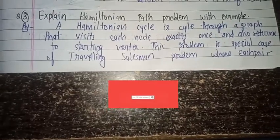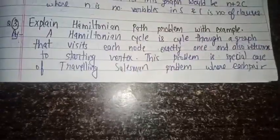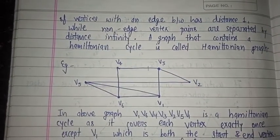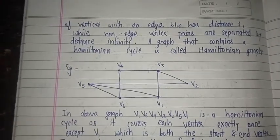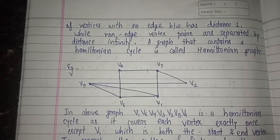This problem is a special case of the traveling salesman problem where each pair of vertices with an edge between has distance 1, while non-adjacent vertex pairs have distance infinity. A graph that contains a Hamiltonian cycle is called a Hamiltonian graph.